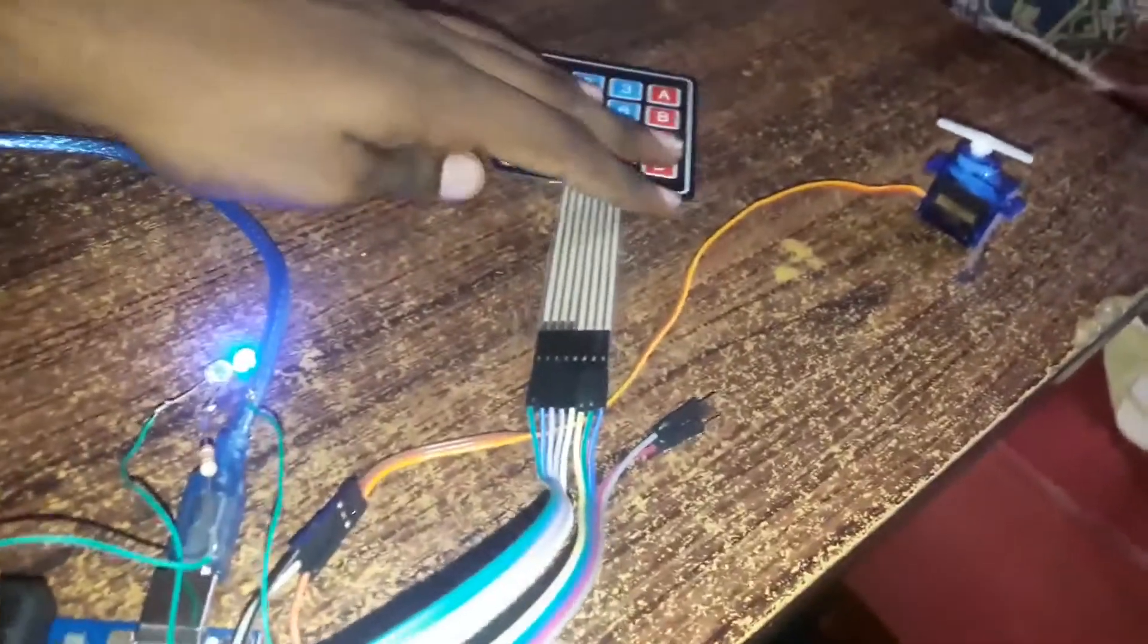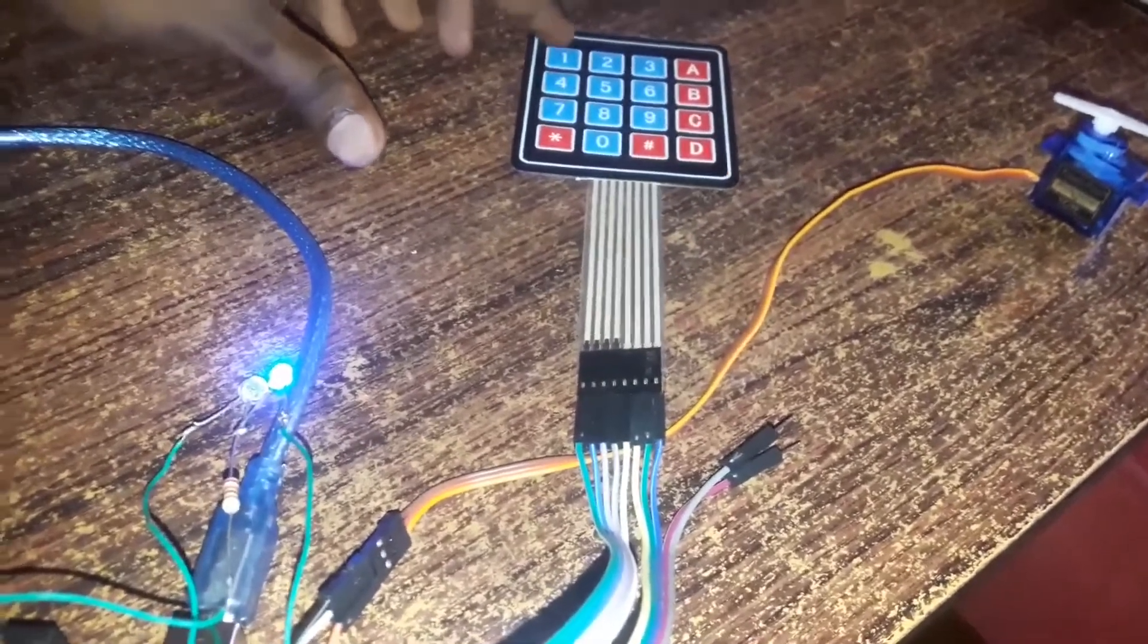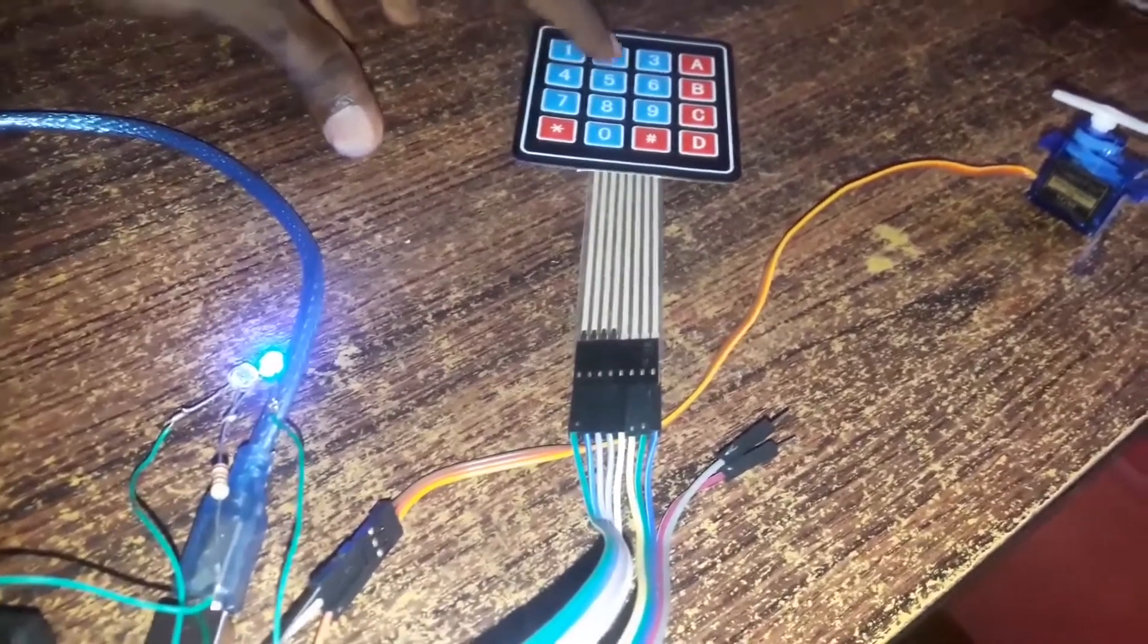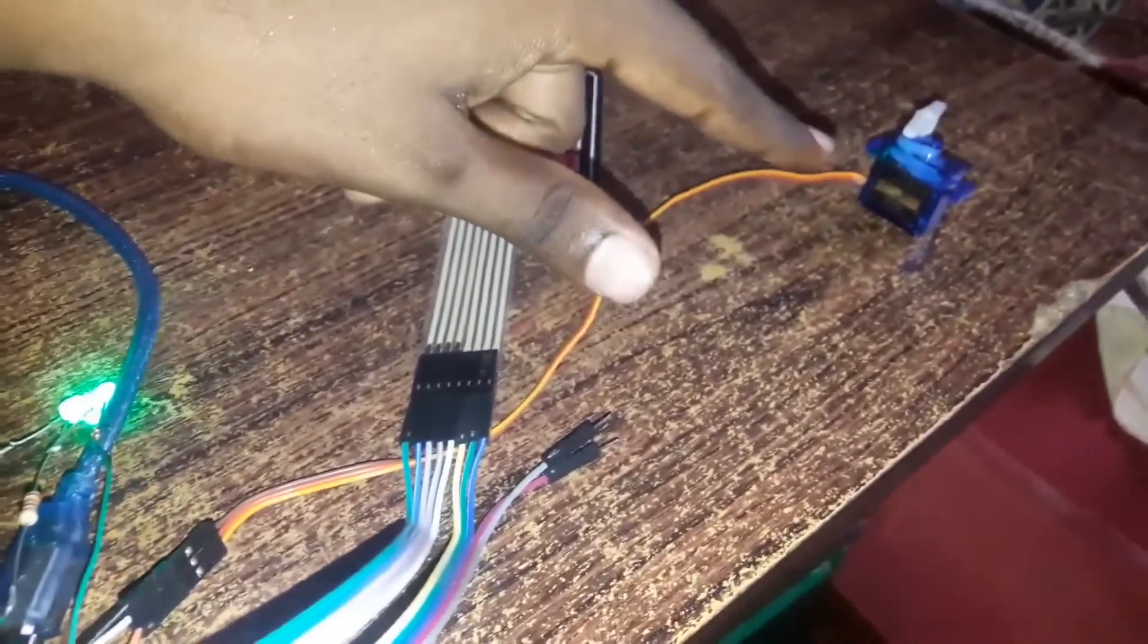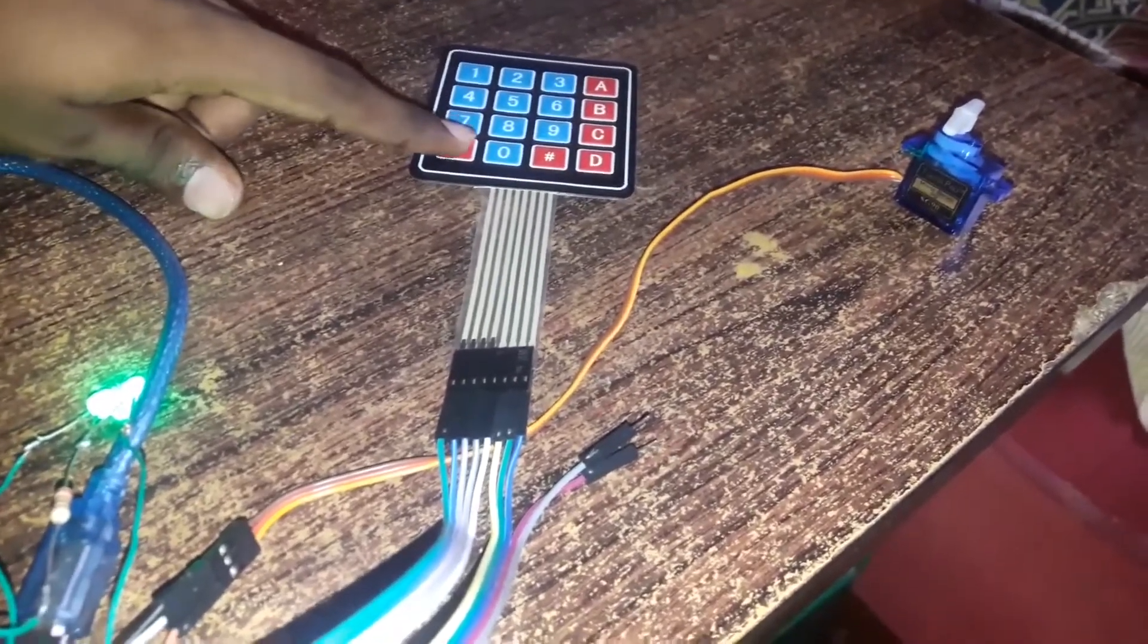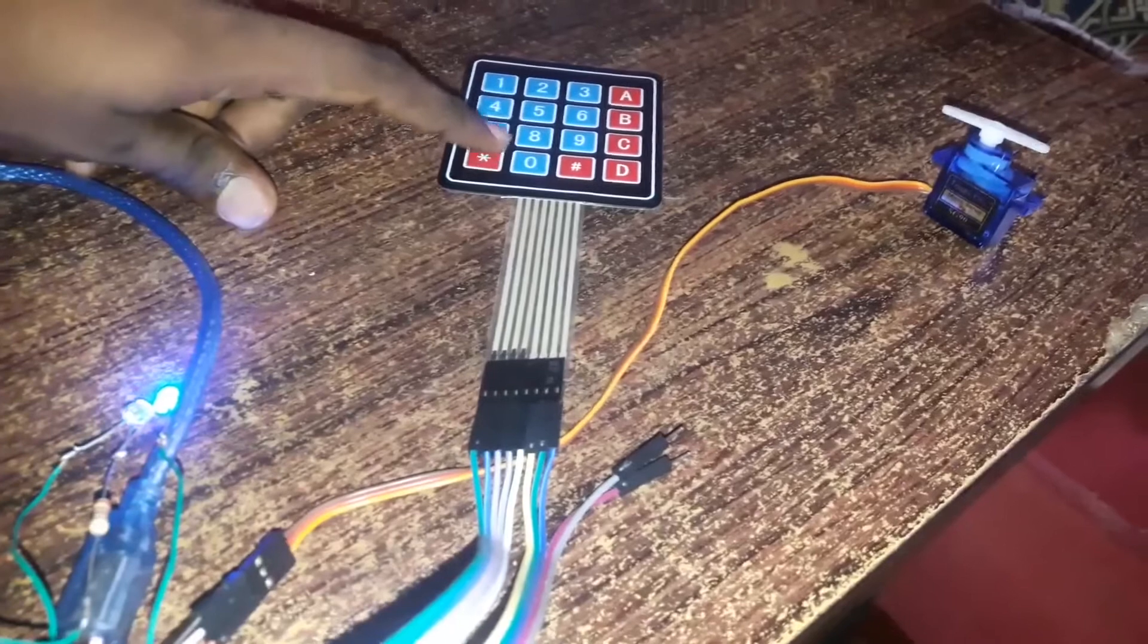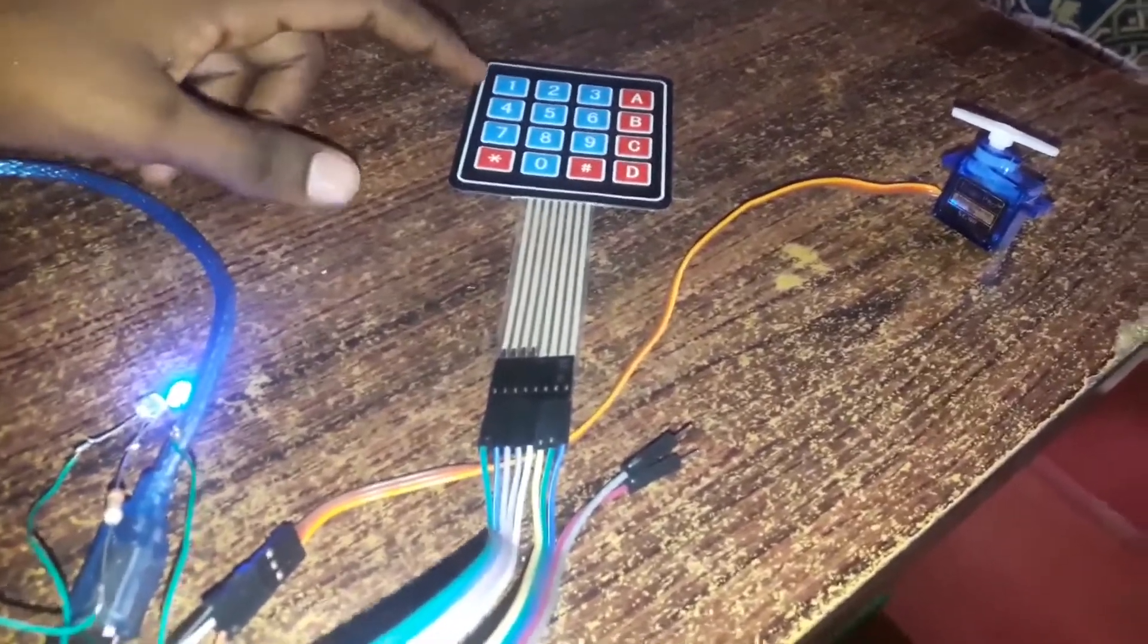Let's move on to the... by entering the password. I first tried by entering the correct password. 159. So, the green light glows and the servo motor turns into the 90 degree position. Star and hash are used to reset the position. The motor and the LED gets the original position.